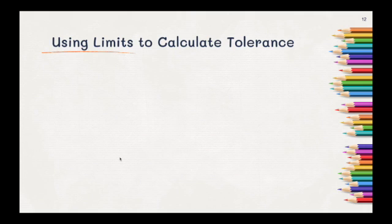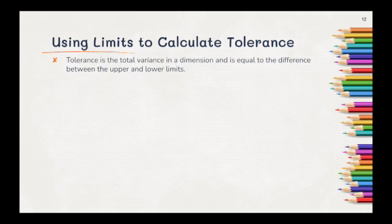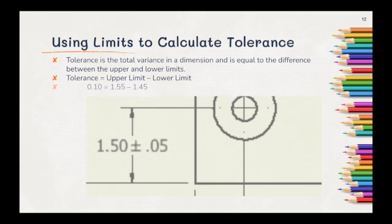So how do we use limits to calculate a tolerance? Tolerance is the total variance in a dimension and is equal to the difference between the upper limit and the lower limit. So in order to find tolerance, we subtract the lower limit from the upper limit. In this example, we have 1.55 minus 1.45, meaning our total tolerance is 0.1.